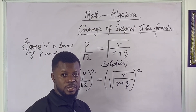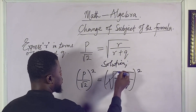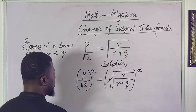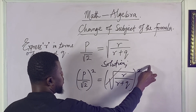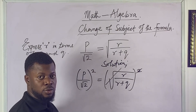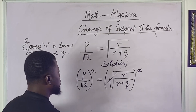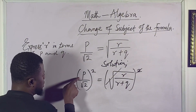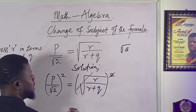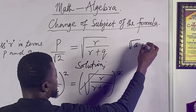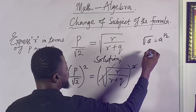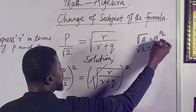Now we've succeeded in doing that. The next step: whenever you see a square root and a square together, they cancel out — it's quite simple. You can also transform the square root to become the exponent one-half. Keep in mind that the square root of a number — say a — is the same thing as a to the power of one-half.